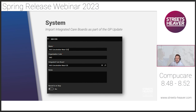We have a further enhancement with integrated care boards. These now import into CompuCare as part of the GP update. In our previous webinar, we added integrated care boards into CompuCare. Now when adding a GP update into the system, it will auto-populate the ICB into the CCG field. When you upgrade your iteration of CompuCare, our support team can also assist with a GP update on your system to get all this information updated.